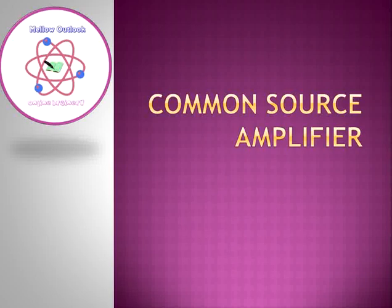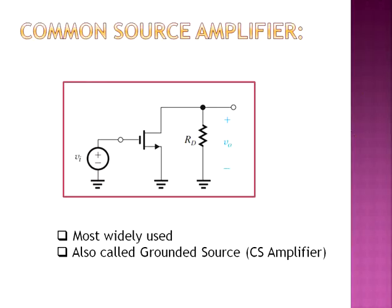Welcome to the tutorial on common source amplifier presented by Mellow Outlook. The common source amplifier is also called the grounded source or CS amplifier. As seen in the circuit diagram, the source terminal is connected to ground and the input voltage is applied between the gate and the source. The output is taken between the drain and the ground across the resistance RD.